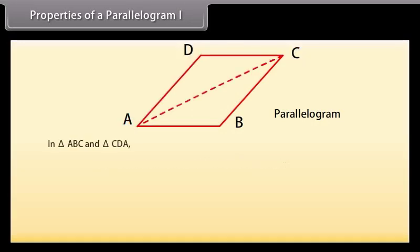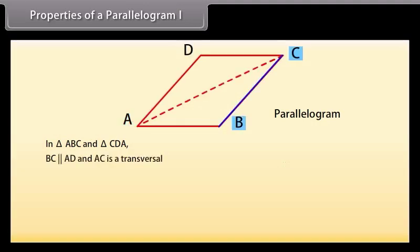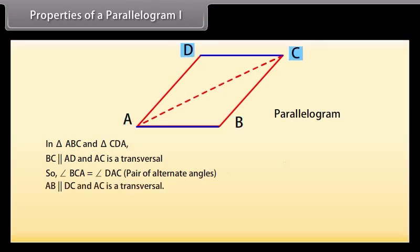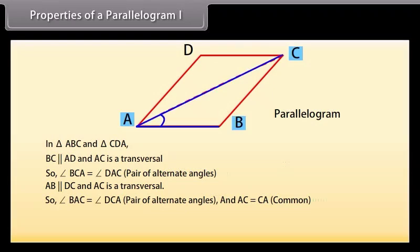In triangle ABC and triangle CDA: BC is parallel to AD and AC is a transversal, so angle BCA = angle DAC (alternate angles). Also, AB is parallel to DC and AC is a transversal, so angle BAC = angle DCA (alternate angles). And AC = CA (common). Therefore, by ASA rule, triangle ABC is congruent to triangle CDA.